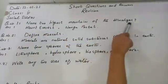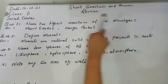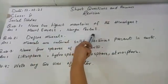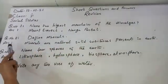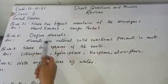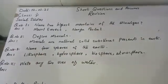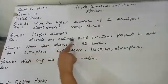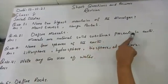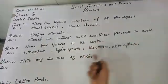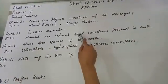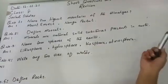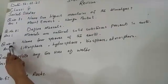Our first question is: name two highest mountains of the Himalayas — Mount Everest and Nanga Parbat. Question number two: define minerals. Minerals are natural solid substances present in the Earth, which are already present in the Earth naturally.